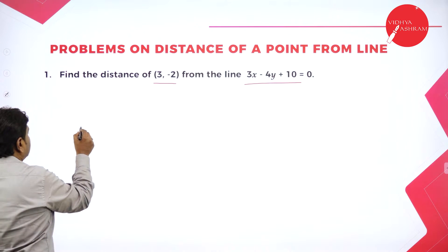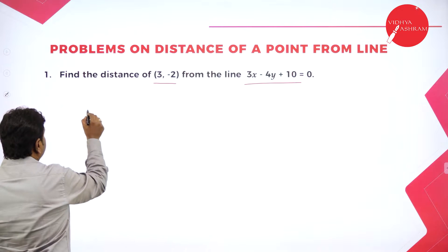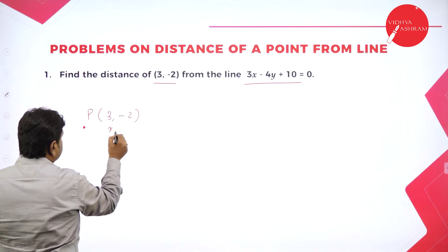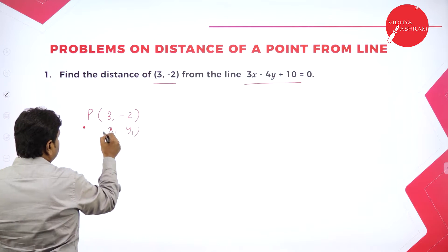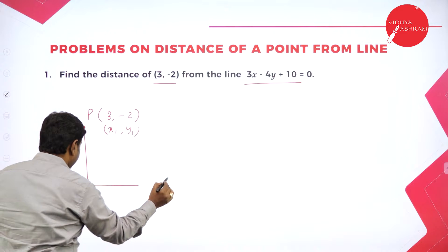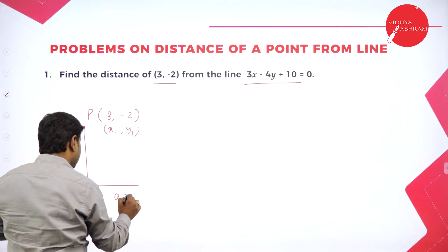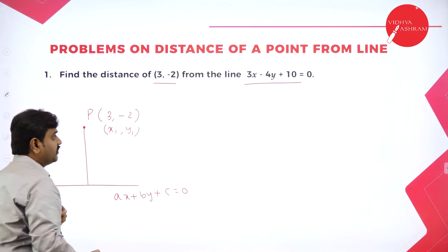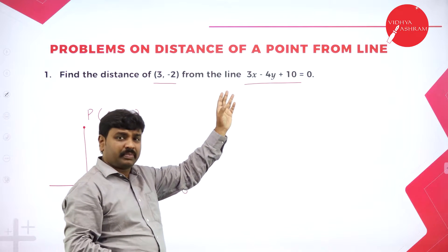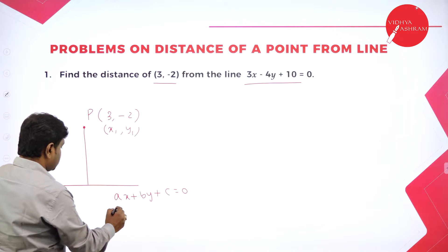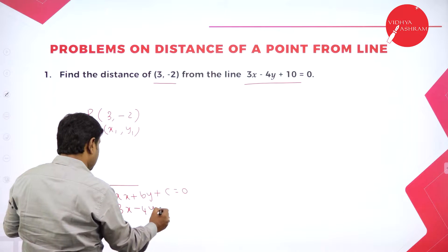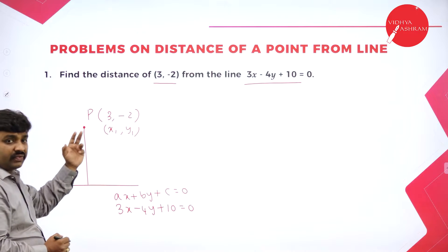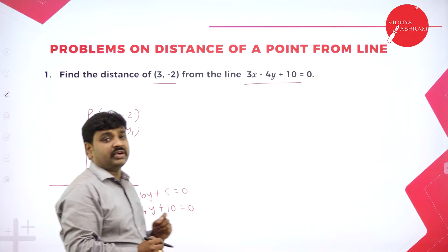Let us recollect what is distance of a point from a line. The point given is (3, -2) — we call it X1, Y1. And the line is always written in general form: AX plus BY plus C equal to 0. Here the line is 3X minus 4Y plus 10 equal to 0. Now you know X1, Y1 and you know A, B, C.